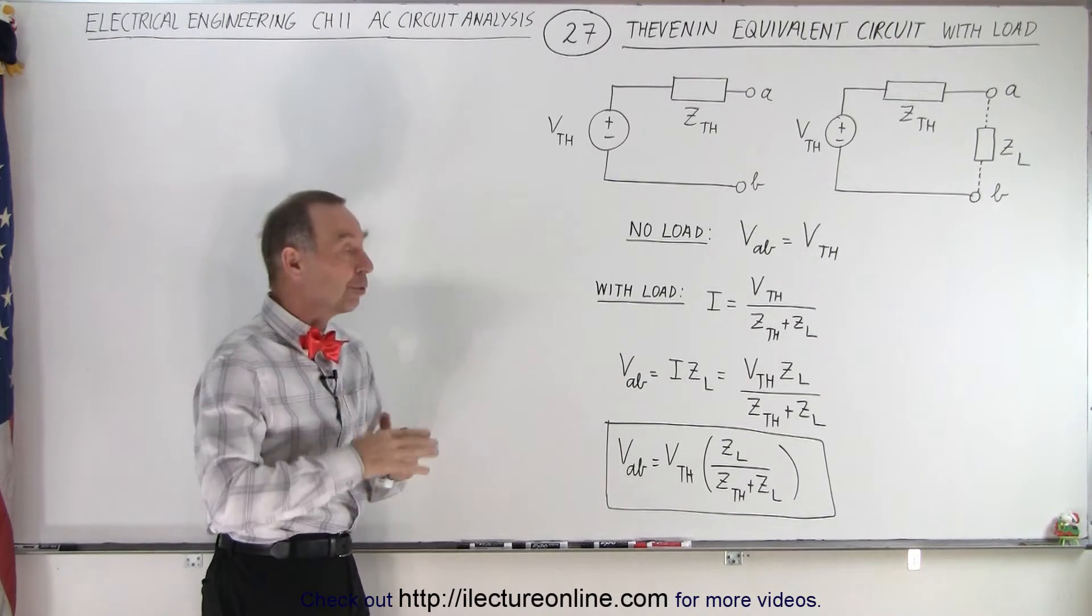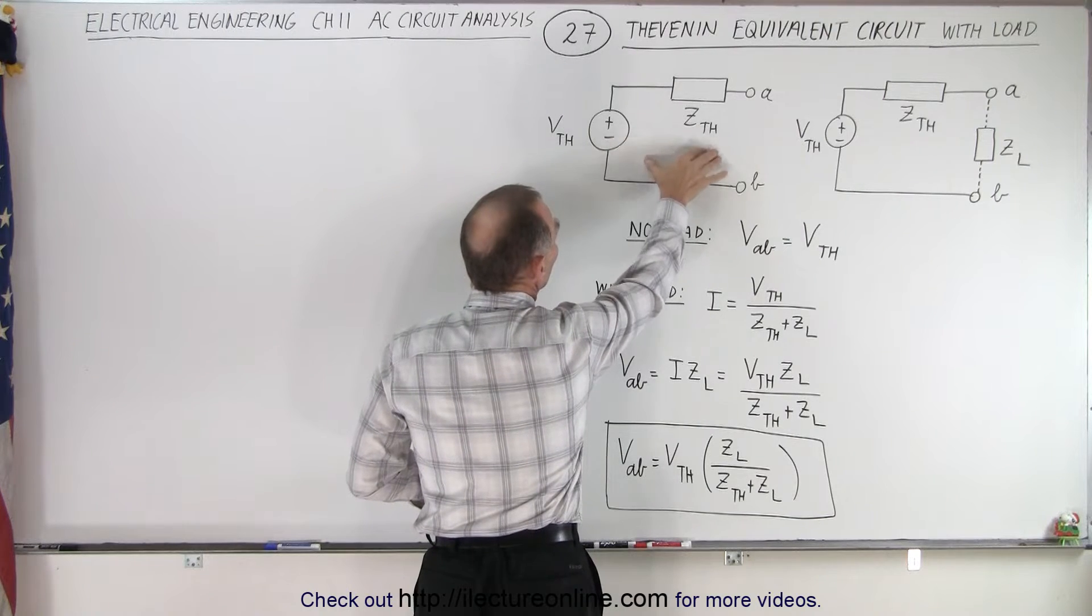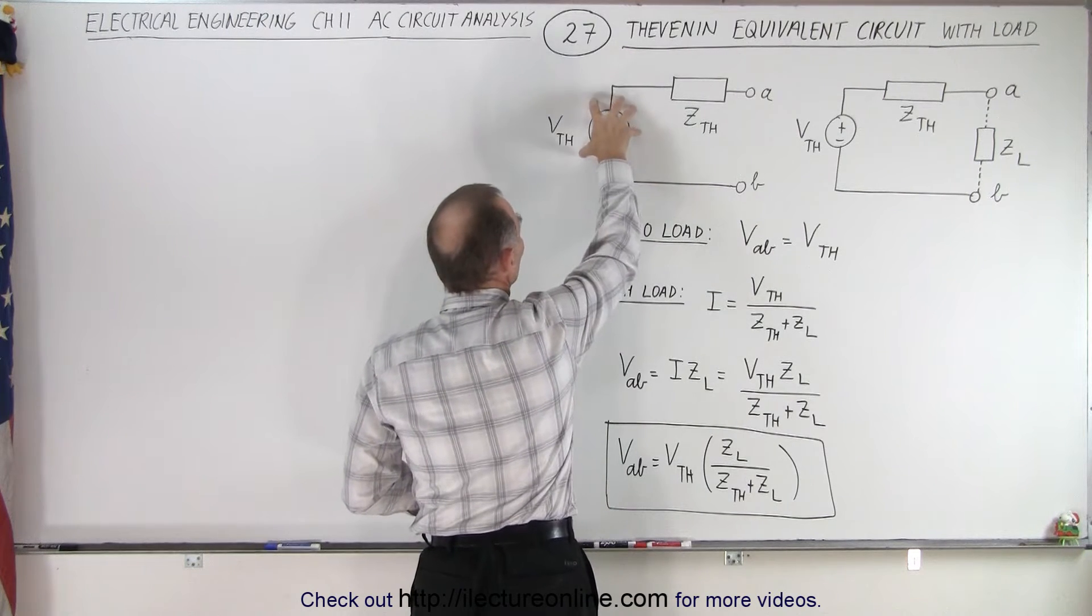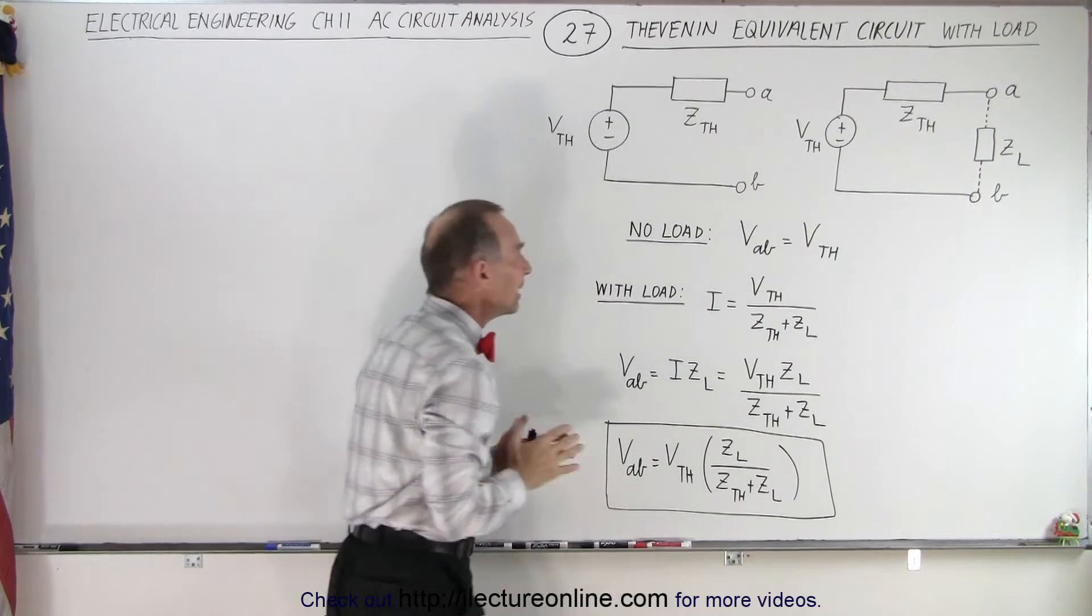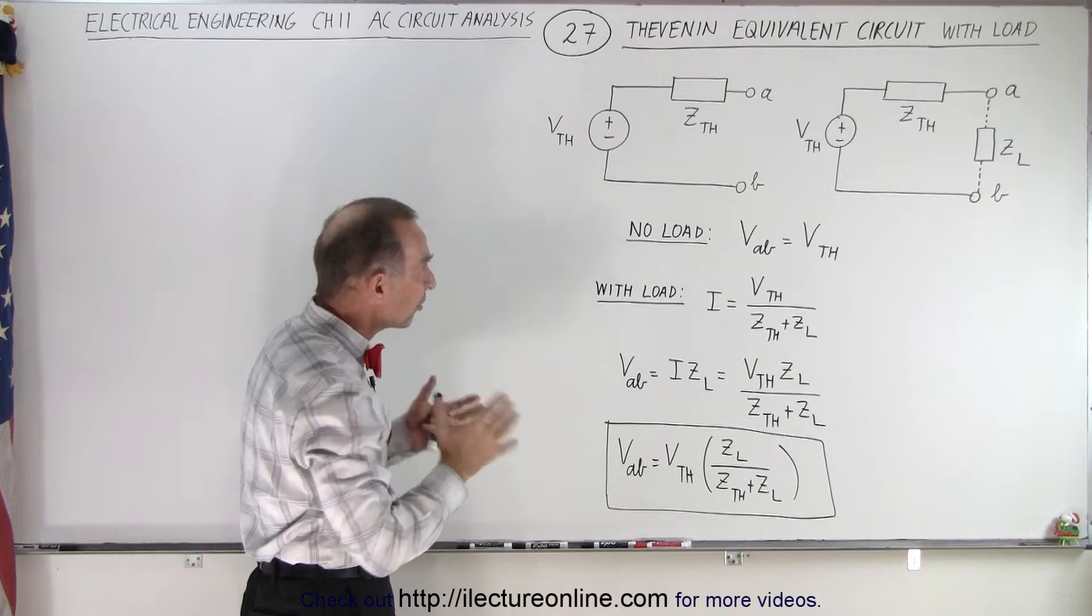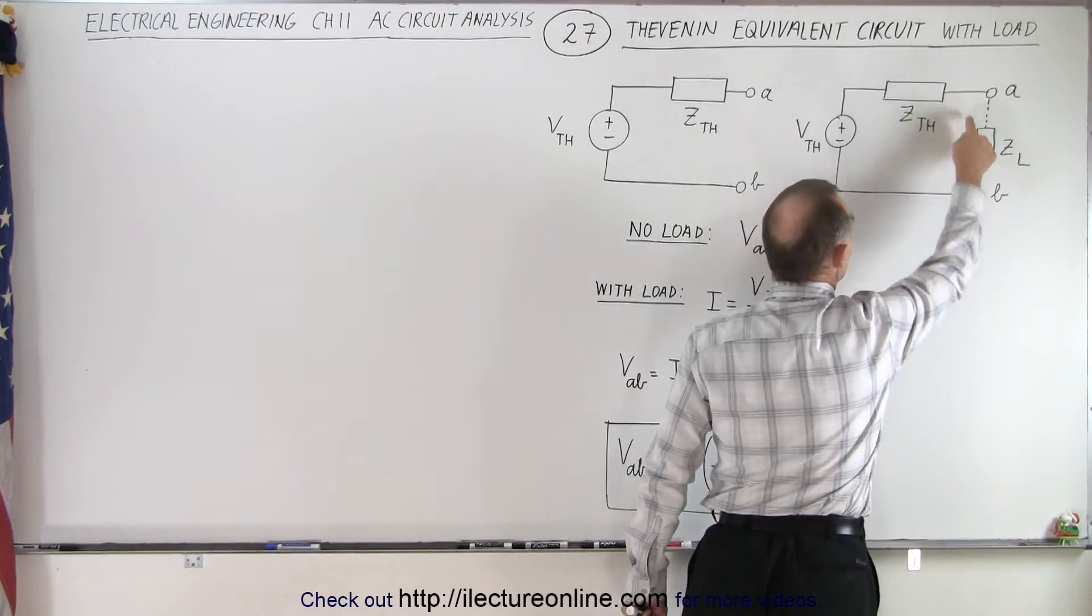In the previous example, we showed you a circuit that looks like this. This is the Thevenin equivalent circuit which has a voltage source called the Thevenin source and a Thevenin impedance in series with one another. But sometimes the circuit includes a load across the terminals from A to B.